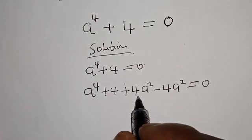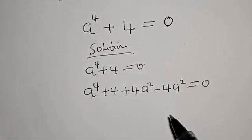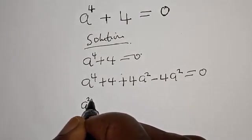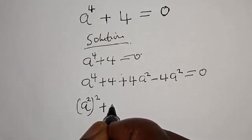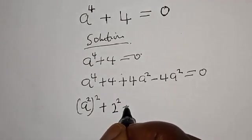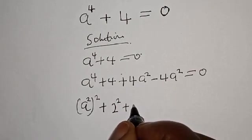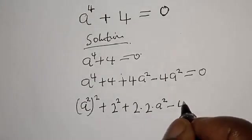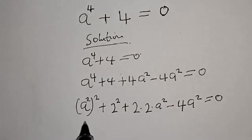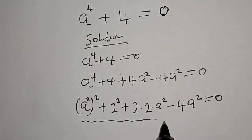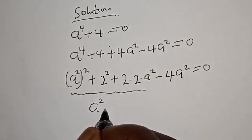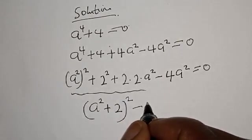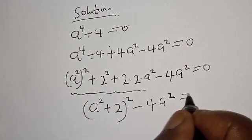This does not formally change the equation because minus 4a squared plus 4a squared, if you cancel them, it will still give you L to the power 4 plus 4. Then we have a squared plus 4a squared, which can be expressed as 2 multiplied by 2 multiplied by a squared, minus 4a squared, equal to 0. This is the same as a squared plus 2a squared minus 4a squared is equal to 0.